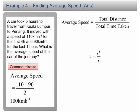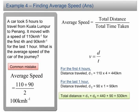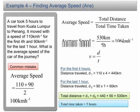Therefore, for the first 4 hours, the distance traveled is 110 times 4, which is equal to 440 km. Therefore, the total distance is 440 plus 90, which is equal to 530 km. The total time taken is 5 hours. As a result, the average speed is equal to 530 km per 5 hours, which is equal to 106 km per hour.